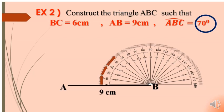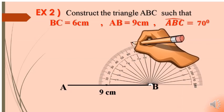Count until you reach 70 degrees. 0, 10, 20, 30, 40, 50, 60, and here it's 70. We mark a line at 70 degrees.